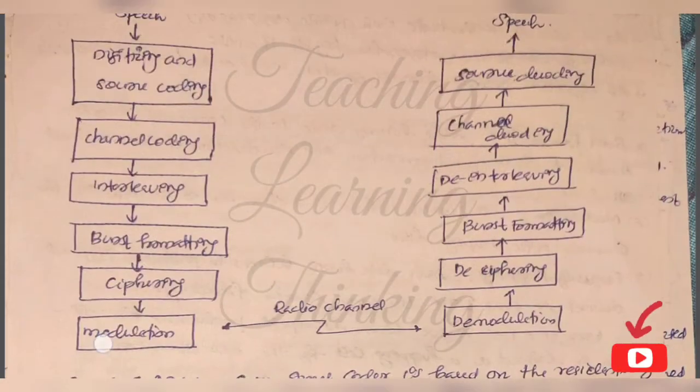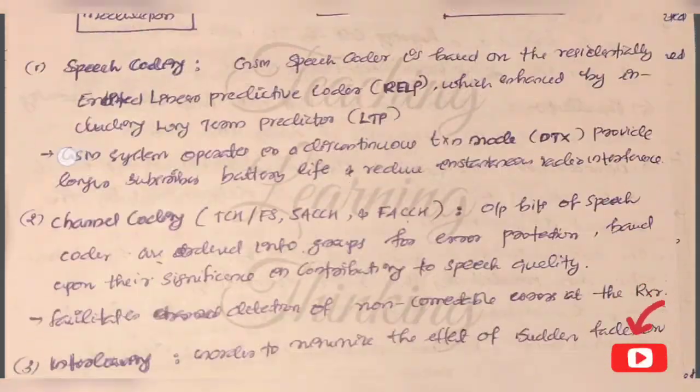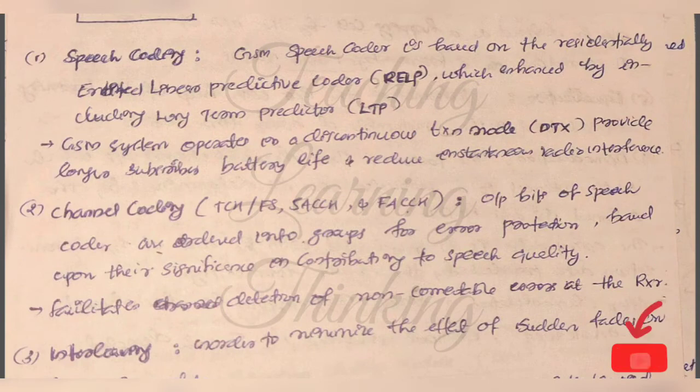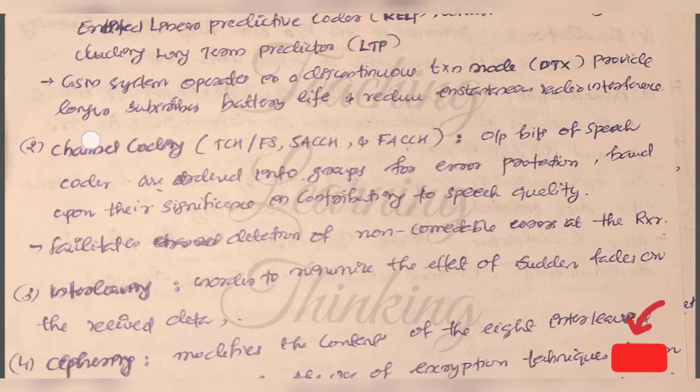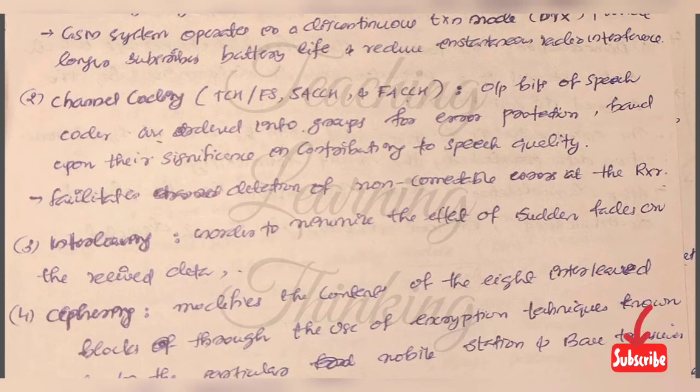The next one is channel coding - TCH/FS, SACCH, and FACCH. The output bits of speech coders are ordered into groups for error protection based upon their significance in contributing to speech quality.